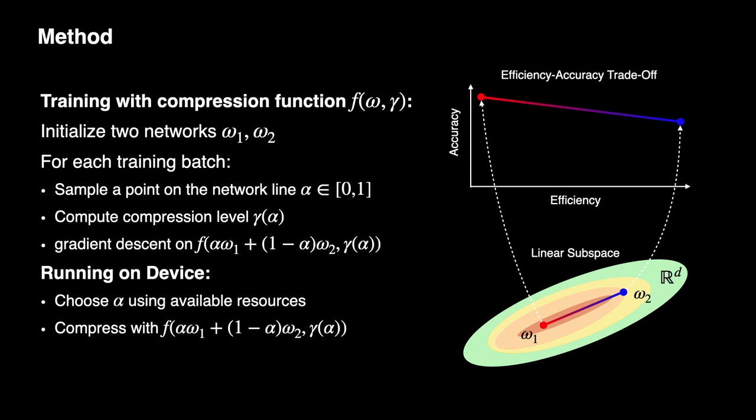To train the subspace, we first initialize the two endpoints. Then, at each iteration, we randomly sample a point along the line, compress the model at that point, and then perform gradient descent on the compressed model, backpropagating gradients to the endpoints.